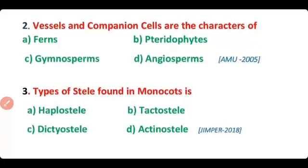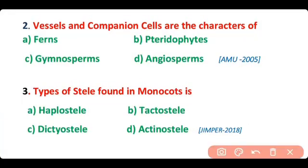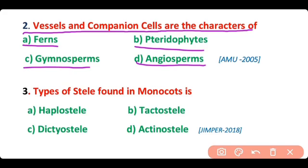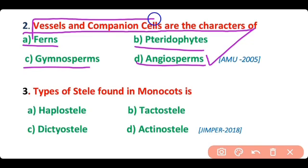Question 2. Vessels and companion cells are the characters of: ferns, pteridophytes, gymnosperms, or angiosperms? The correct answer is option D. Vessels and companion cells are present in angiosperms.